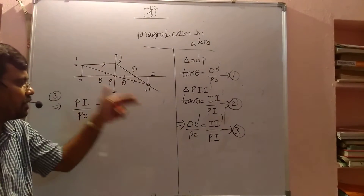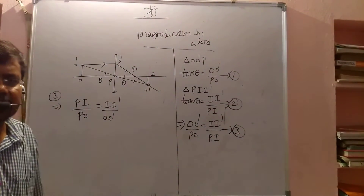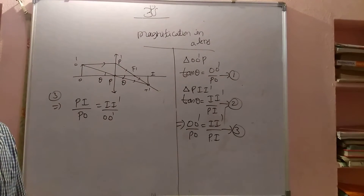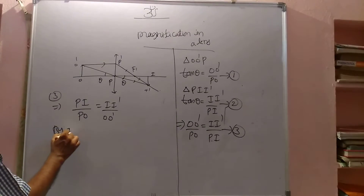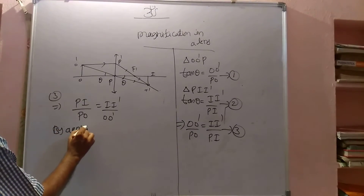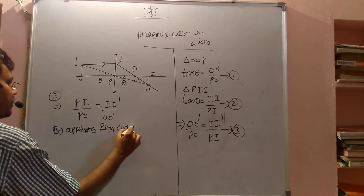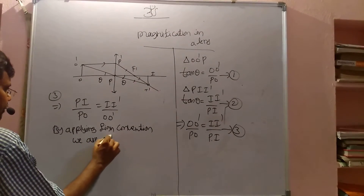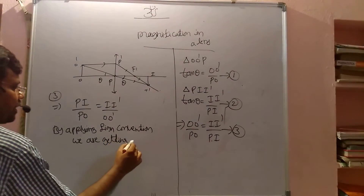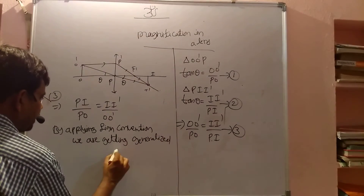This is the magnification for this particular case, but I want to apply it for any case — any lens, any position. For that purpose, we apply the sign convention. By applying the sign convention, we get the generalized equation.